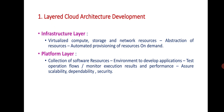First, let's see about the infrastructure layer. Infrastructure layer means virtualized compute, storage, and network resources — it is an abstraction of resources. You can access only the functionality of the infrastructure layer. It provides automated provisioning of resources on user demand.